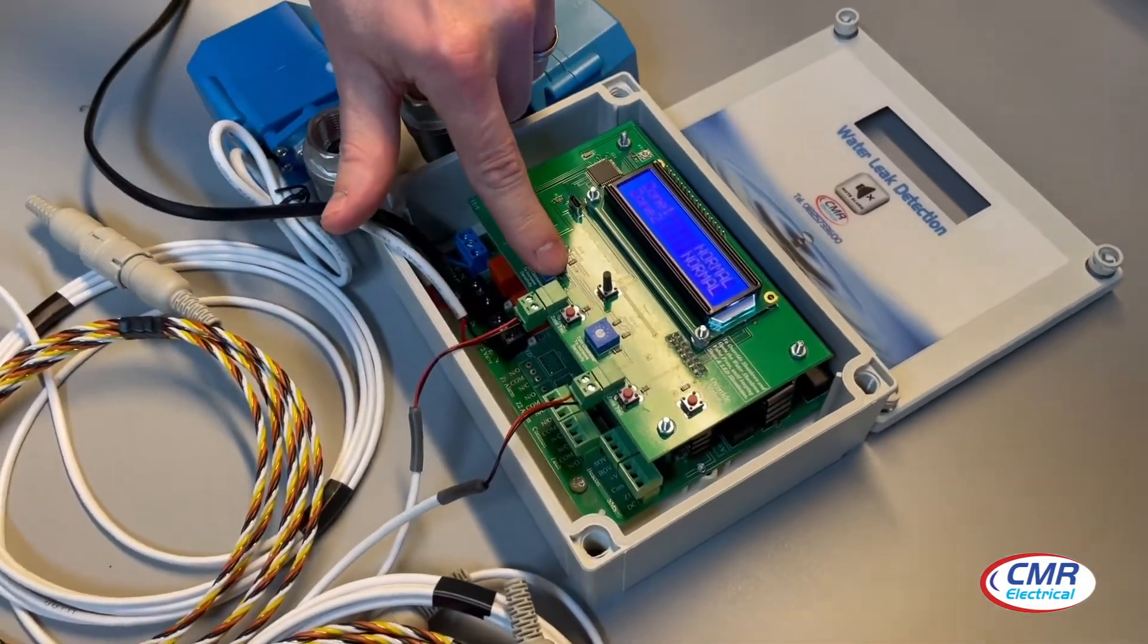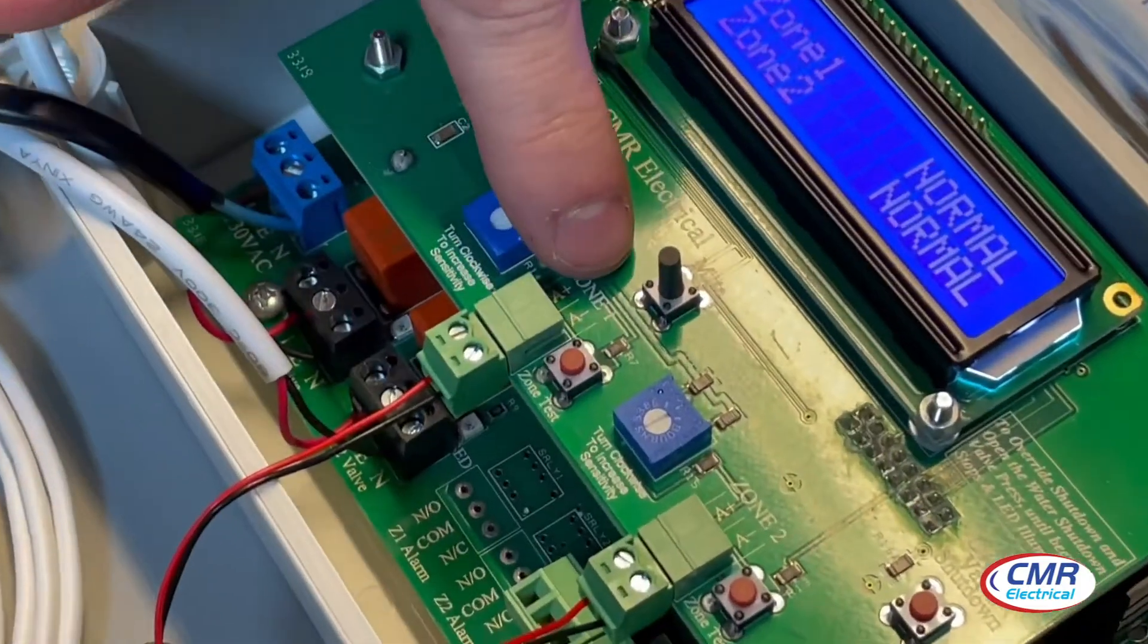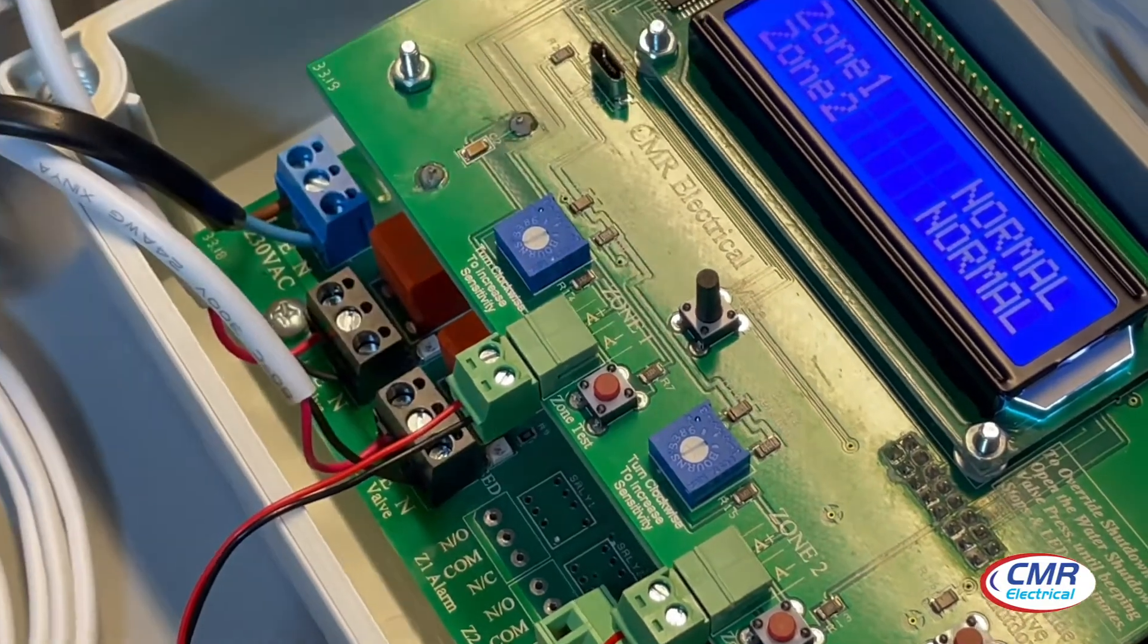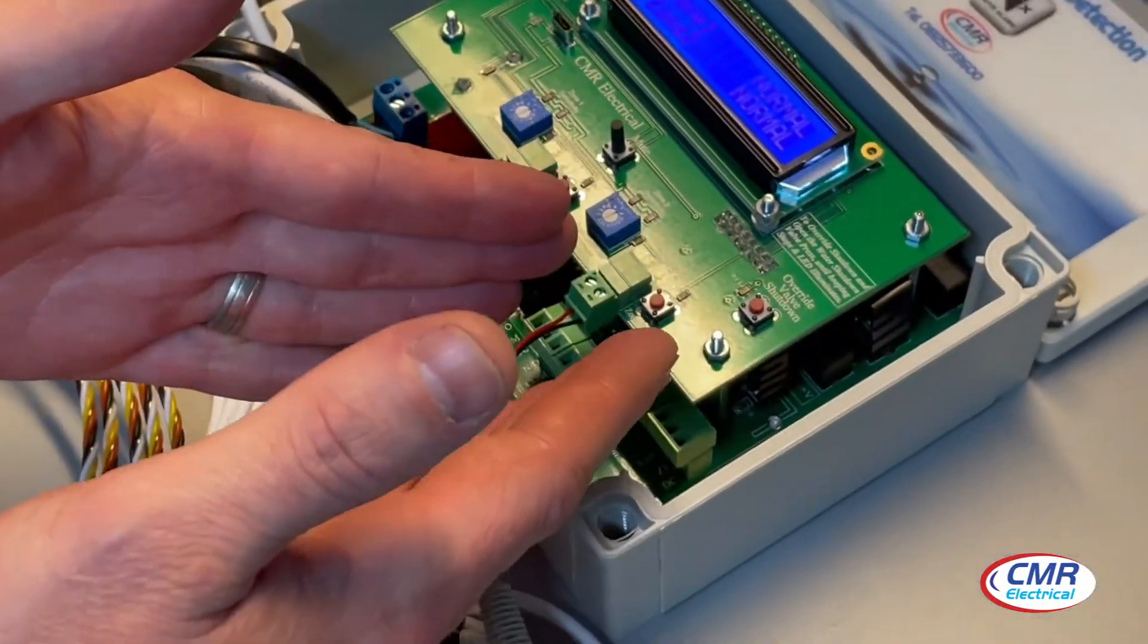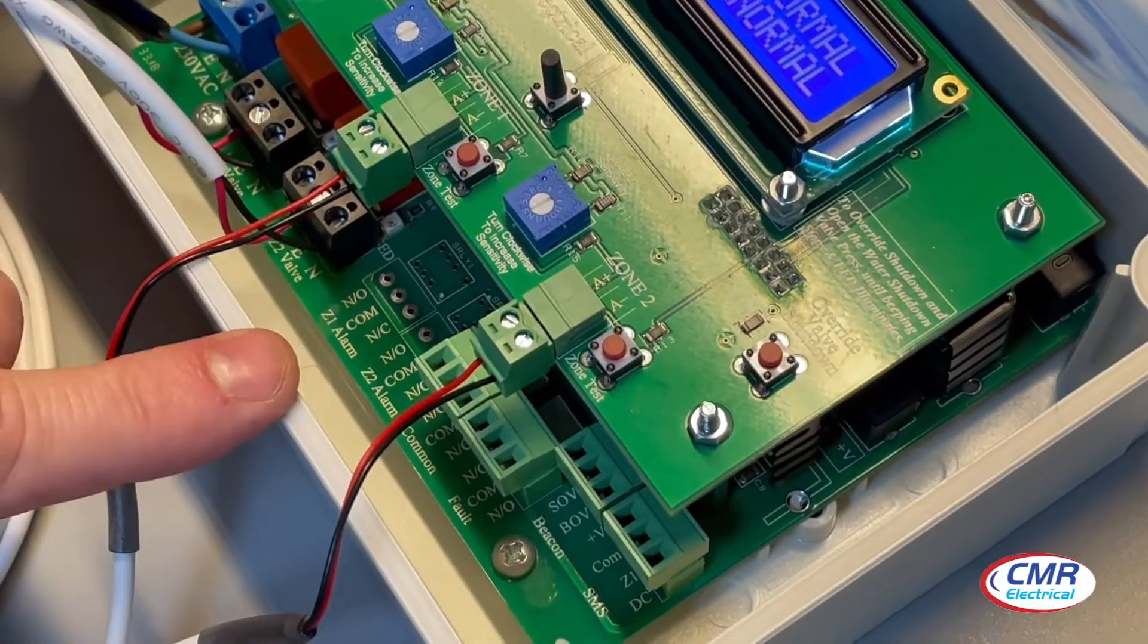The red wire goes to the A+, and the black wire goes to the A-. It's exactly the same for zone 2 if you have zone 2 fitted. It just connects exactly the same.